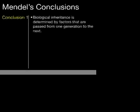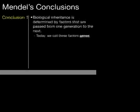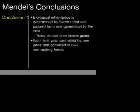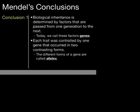Based on his observations, Mendel was able to make two conclusions. The first was that inheritance is determined by factors that are passed from one generation to the next — we call these factors genes. Each trait was controlled by one gene that occurred in two contrasting forms. These contrasting forms we call alleles.